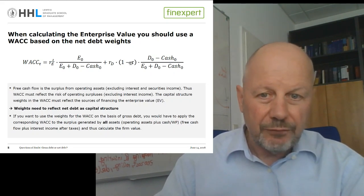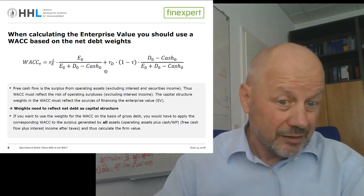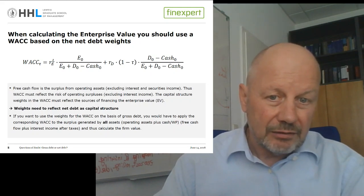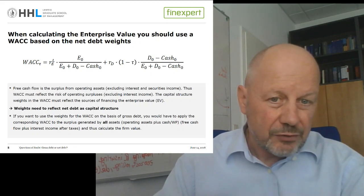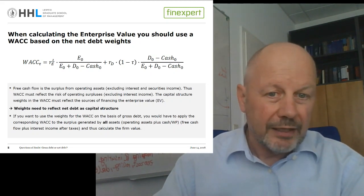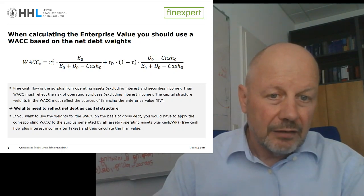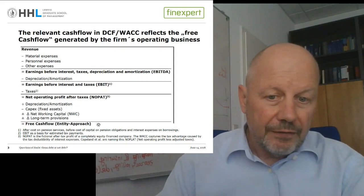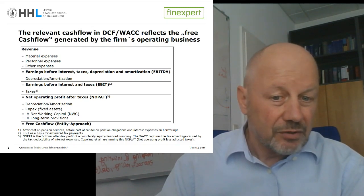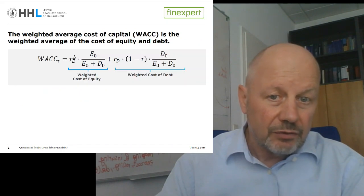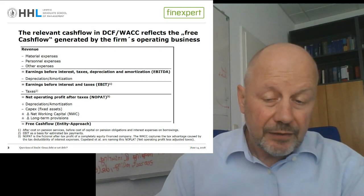The question is now: is there a way to save the gross debt approach for the weights? Yes, there is. But then we would have to leave our classical DCF WACC model, because if we take gross debt and firm value in the nominator for the weights of the WACC, then the corresponding cash flow should also be the cash flow generated by all assets, not just by the operating assets. That would mean we would have to add to this cash flow definition the net interest income generated by our financial assets, because then the weights would correspond to the firm value and the cash flow would reflect all assets.